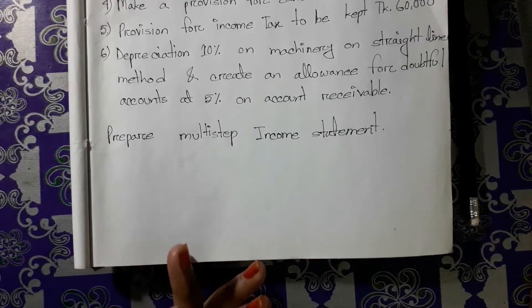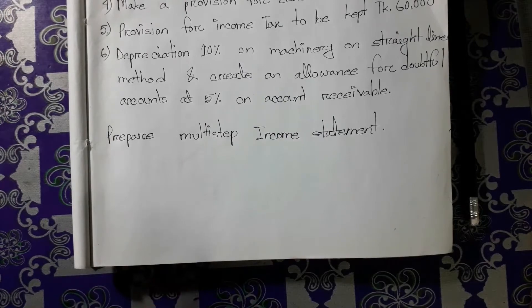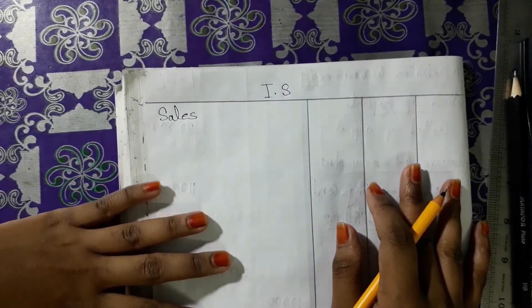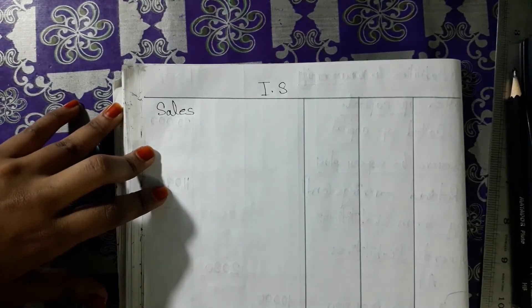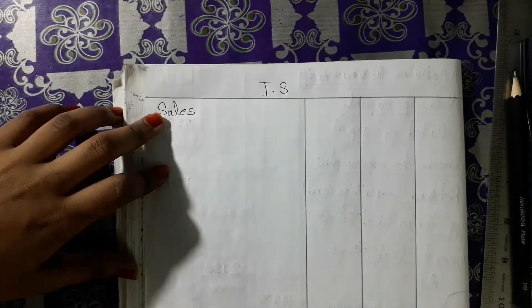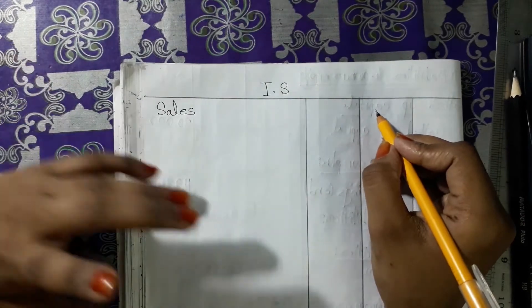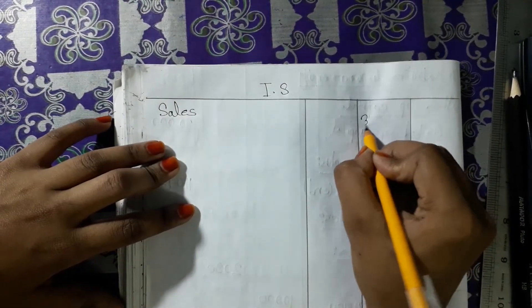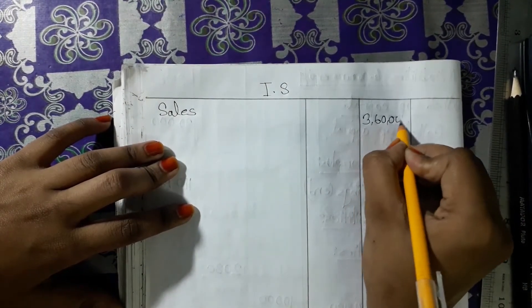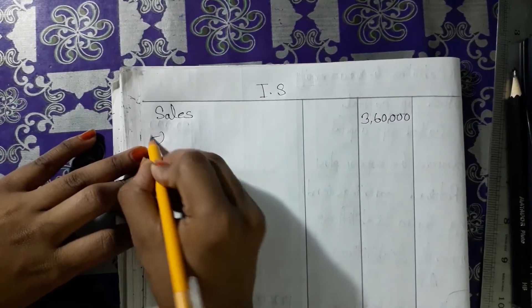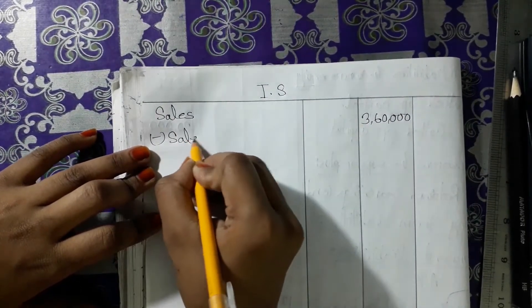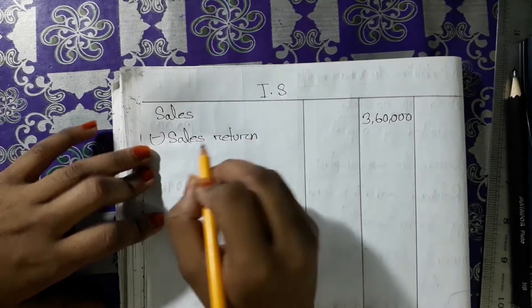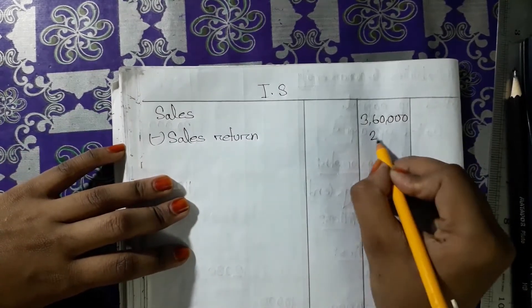We will start the income statement. In the income statement, the first items are sales. Sales is 3,000,000. Then you write 4,000,000. Then you will see sales returns, and we will write the sales returns.